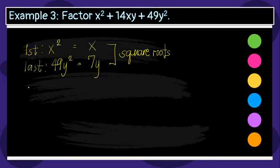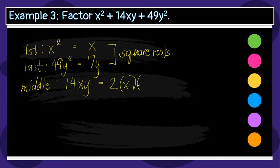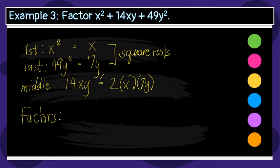Let's check the middle term, which is positive 14xy. We compute twice the product of the square roots of the first and last terms: 2 times x times 7y equals 14xy, which is correct — equal to the middle term of the given. The conditions are satisfied, so the factors of x squared plus 14xy plus 49y squared is the quantity of x plus 7y, squared.